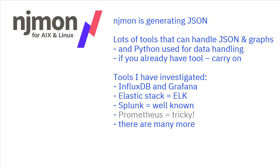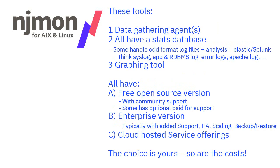There are many more tools available — if you have your favorite, carry on and use that. These tools typically have three parts: a data gathering agent you put on your virtual machine, a stats database where all the data gets pushed, and a graphing engine. Some of them, like Elastic and Splunk, are good at handling oddly formatted log files for analysis — you tell it which columns are which, what their names are, and then you can graph those stats. JSON data is highly structured data, which doesn't need much explanation.